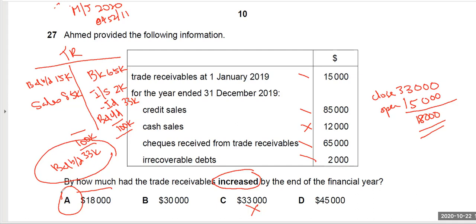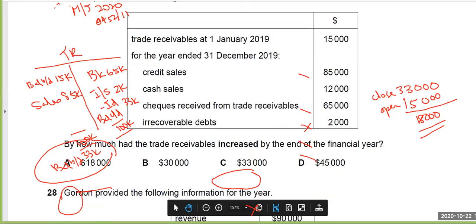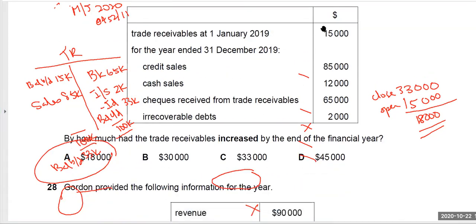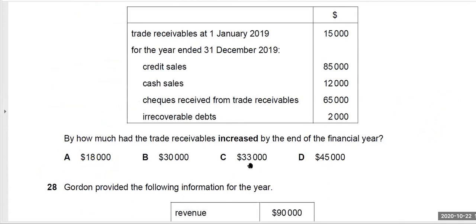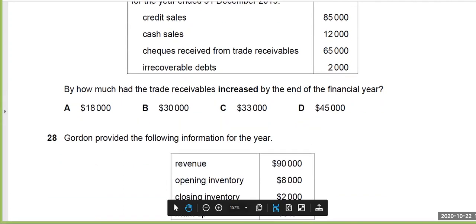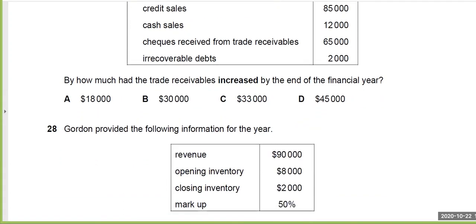You can watch this again and listen to this video again if you're still not sure. Again, double entry, you have to be pretty good in it. So now let's move on to the next question. Next question is, Gordon provided the following information for the year. Question 28.